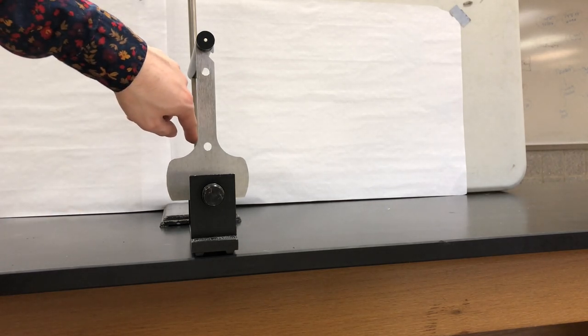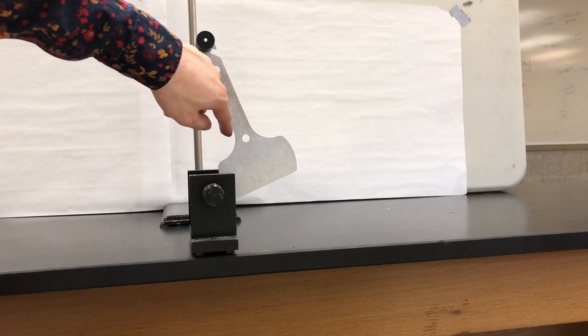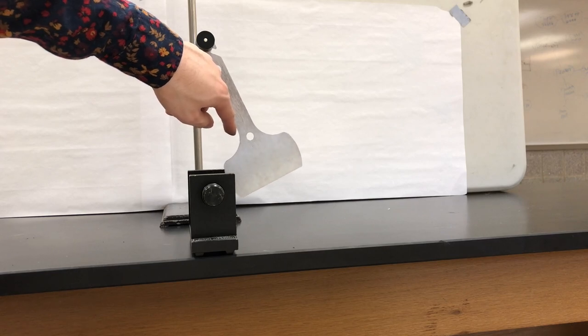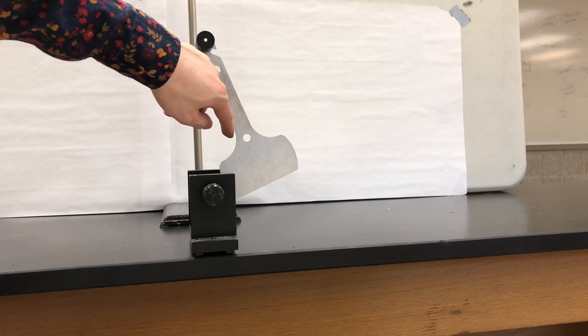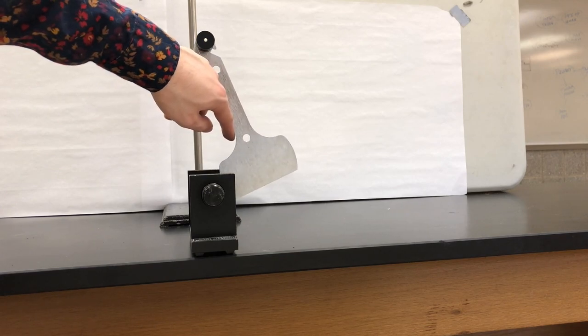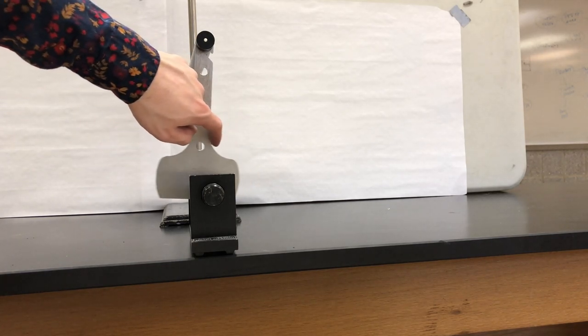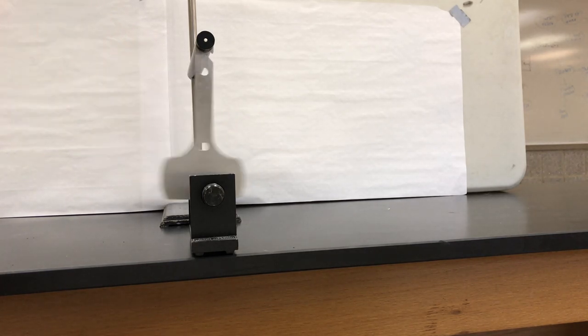It will continue to create eddy currents opposing that change in flux until it starts to leave the field. Now it wants to regain those magnetic field lines because the change in flux would be that it's losing magnetic field lines in its area. So it will produce different eddy currents in order to keep those field lines from leaving. And we can see that because it basically stops moving due to those eddy currents.